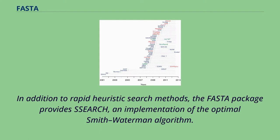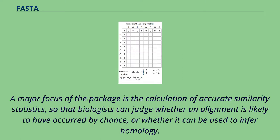In addition to rapid heuristic search methods, the FASTA package provides search and implementation of the optimal Smith-Waterman algorithm. A major focus of the package is the calculation of accurate similarity statistics, so that biologists can judge whether an alignment is likely to have occurred by chance, or whether it can be used to infer homology.